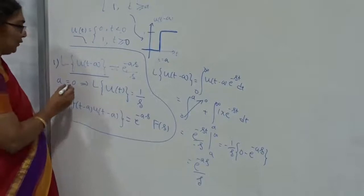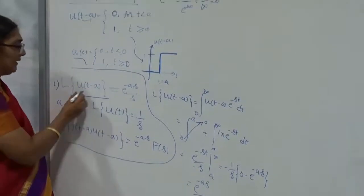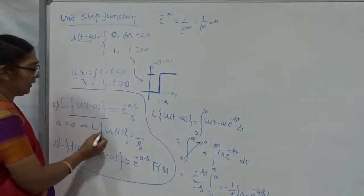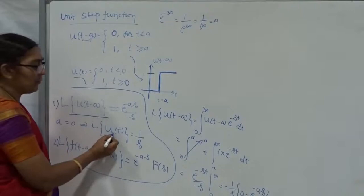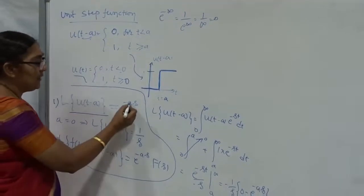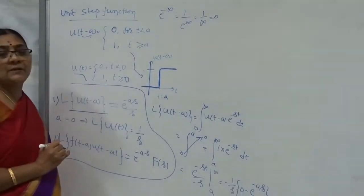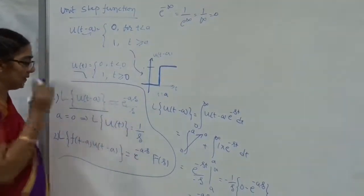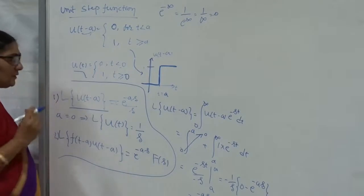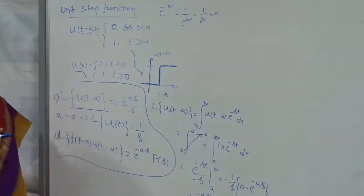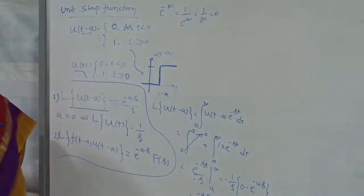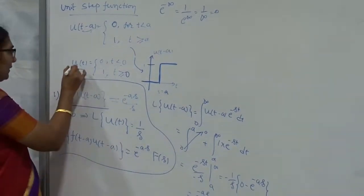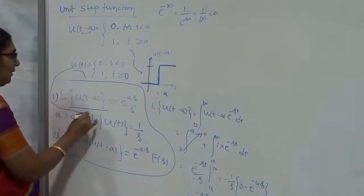Similarly, suppose I put A equal to 0. The Laplace transform of U of T becomes e to the power of 0 divided by S, and e to the power of 0 is 1. Therefore, the Laplace transform of U of T is nothing but 1 by S. This is the Laplace transform of this function.